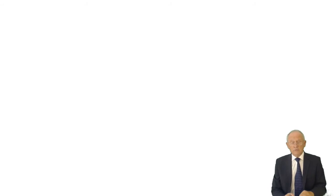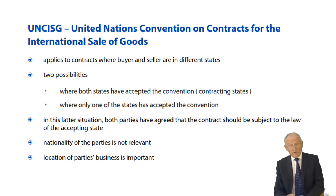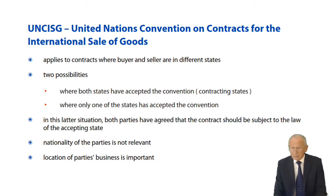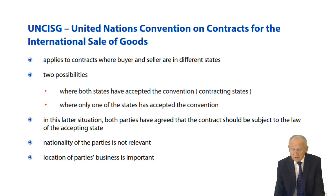The United Nations Convention on Contracts for the International Sale of Goods applies to contracts between two parties where the buyer and the seller are in different states — hence the word international. There are three possibilities. The first, which we're not interested in, is where neither the state of the buyer nor the state of the seller has signed into this international convention.